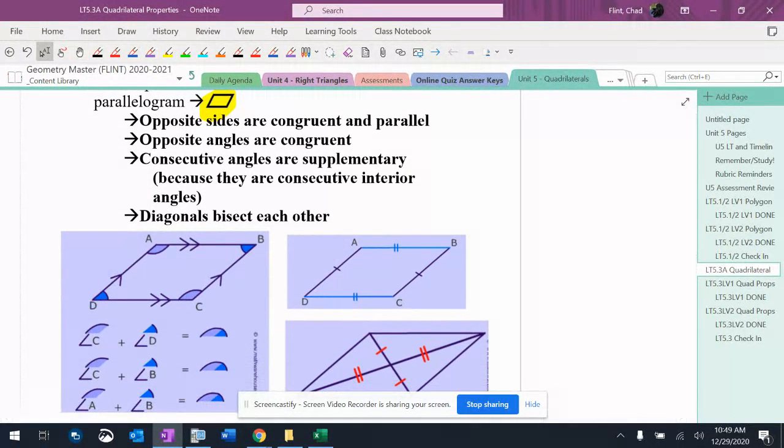So if I had to pick one quadrilateral to know all the properties of, this is probably the most important one because these apply to really everything except trapezoid and isosceles trapezoid.